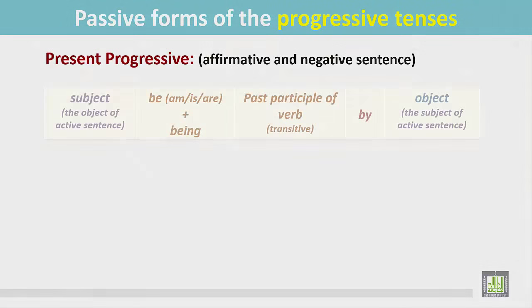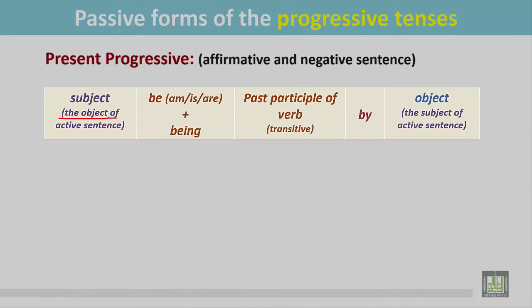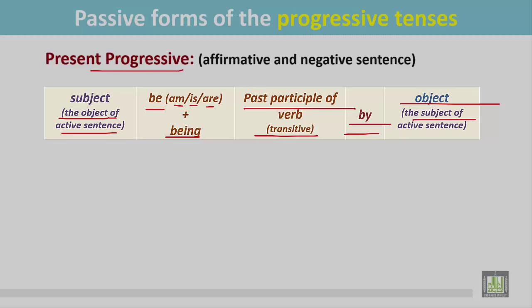See the structure. The subject is the object of the active sentence. Then the be verb — am, is, or are — according to the number and person of the subject. Then 'being', as it is a progressive tense. Then the past participle form of the transitive verb, followed by the preposition 'by'. Finally, the object, which is the subject of the active sentence.